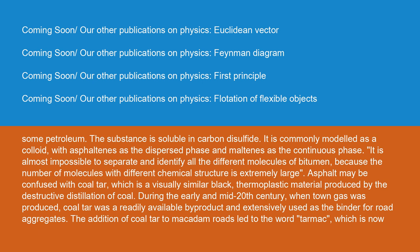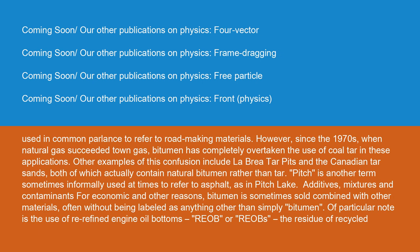During the early and mid-20th century, when town gas was produced, coal tar was a readily available byproduct and extensively used as the binder for road aggregates. The addition of coal tar to macadam roads led to the word tarmac, which is now used in common parlance to refer to road-making materials. However, since the 1970s, when natural gas succeeded town gas, bitumen has completely overtaken the use of coal tar in these applications. Other examples of this confusion include La Brea tar pits and the Canadian tar sands, both of which actually contain natural bitumen rather than tar. Pitch is another term sometimes informally used to refer to asphalt, as in pitch lake.